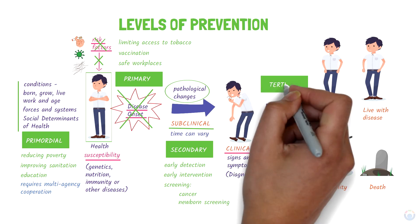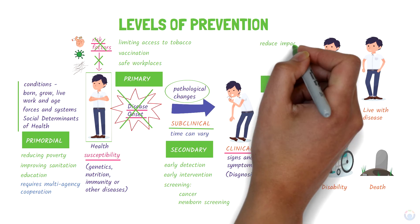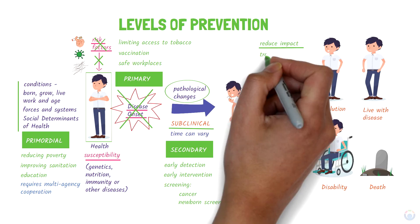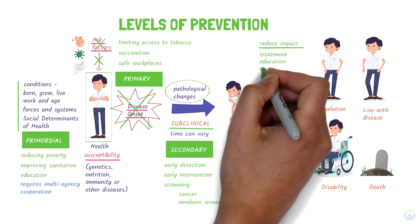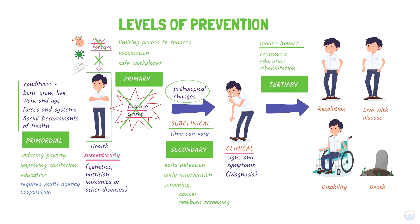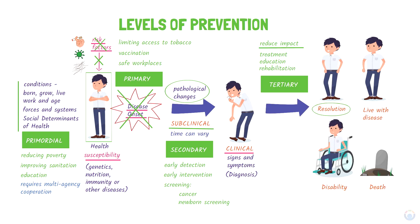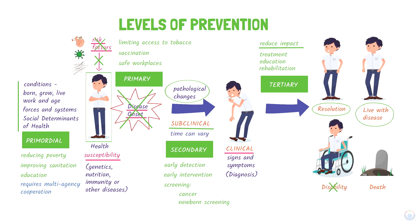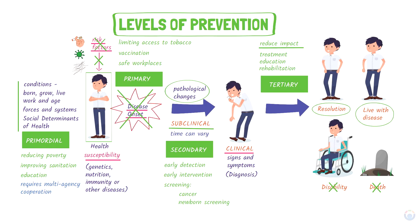The goal of tertiary prevention is to reduce the impact of a disease through effective treatment, education, and rehabilitation. This can make the person recover from their illness sooner, improve the patient's quality of life, prevent disability, and reduce mortality. And that's an overview of the different levels of prevention.